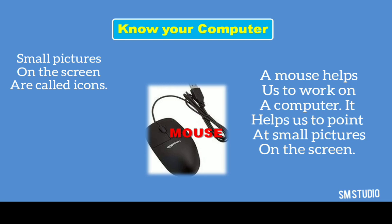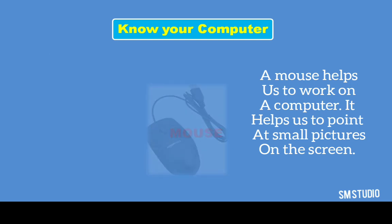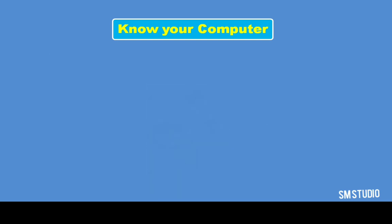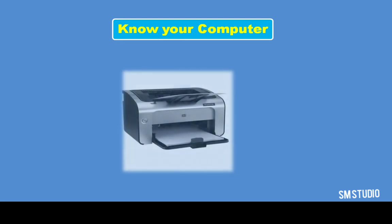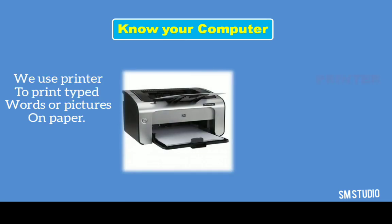Mouse: A mouse helps us to work on a computer. It helps us to point at small pictures on the screen. Small pictures on the screen are called icons. Printer: We use a printer to print typed words or pictures on a paper.